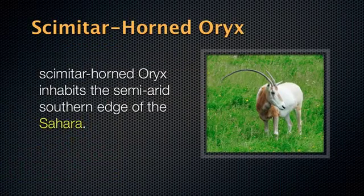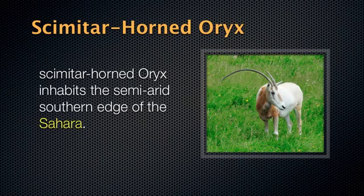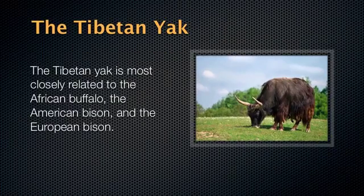Another example: the scimitar horned oryx, which inhabits the semi-arid southern edge of the Sahara. The last example is the Tibetan yak, most closely related to the African buffalo, the American bison, and the European bison. That is the end of section 5.2.